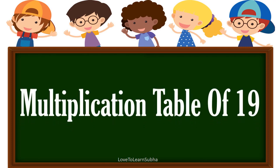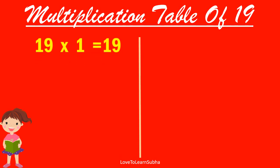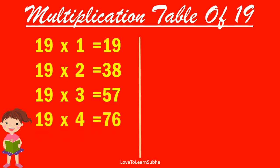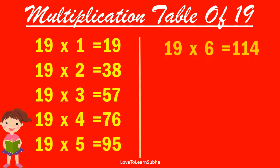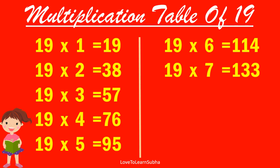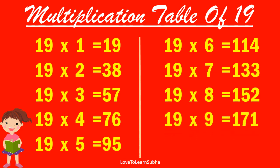Multiplication table of 19. 19×1 is 19, 19×2 is 38, 19×3 is 57, 19×4 is 76, 19×5 is 95, 19×6 is 114, 19×7 is 133, 19×8 is 152, 19×9 is 171, 19×10 is 190.